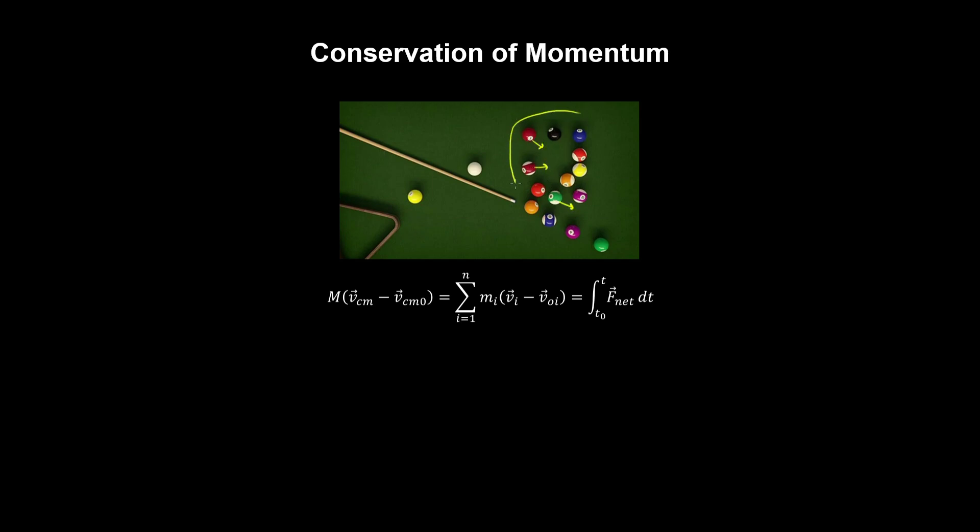We'll take this as our system, and we neglect friction with the table, such that the net external force acting on the system is zero. Therefore, the net impulse on the system is zero, and the total momentum in the system is conserved.